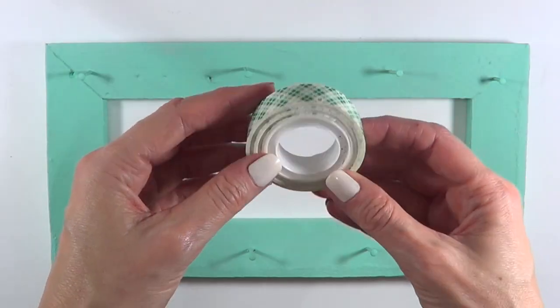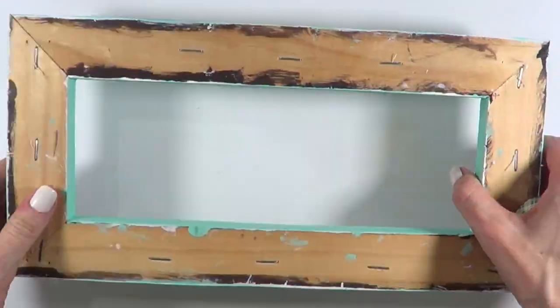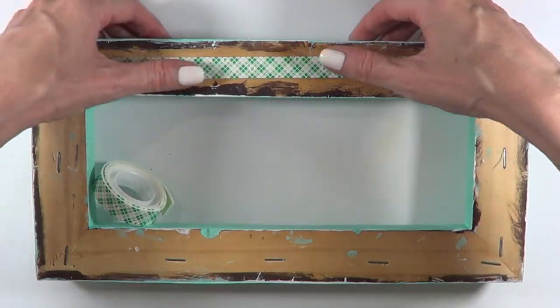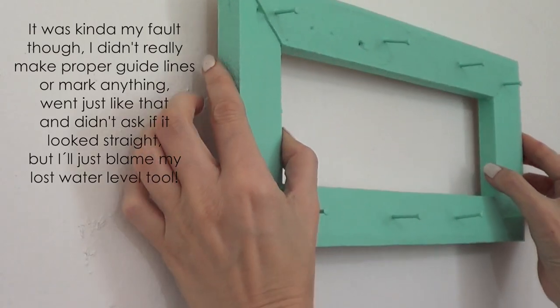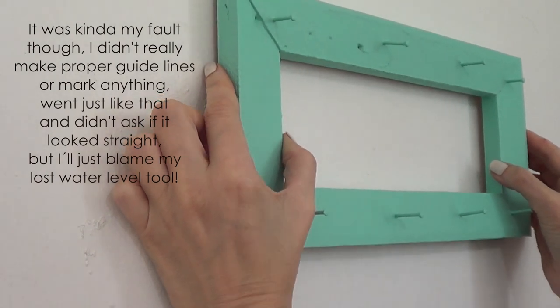And then because I don't want to have holes in the walls, I'm just going to be using this tape. And I'm just going to be taping the frames onto the wall. If you're using this kind of tape, it's tricky. The one on top looks a bit wonky, I feel like.